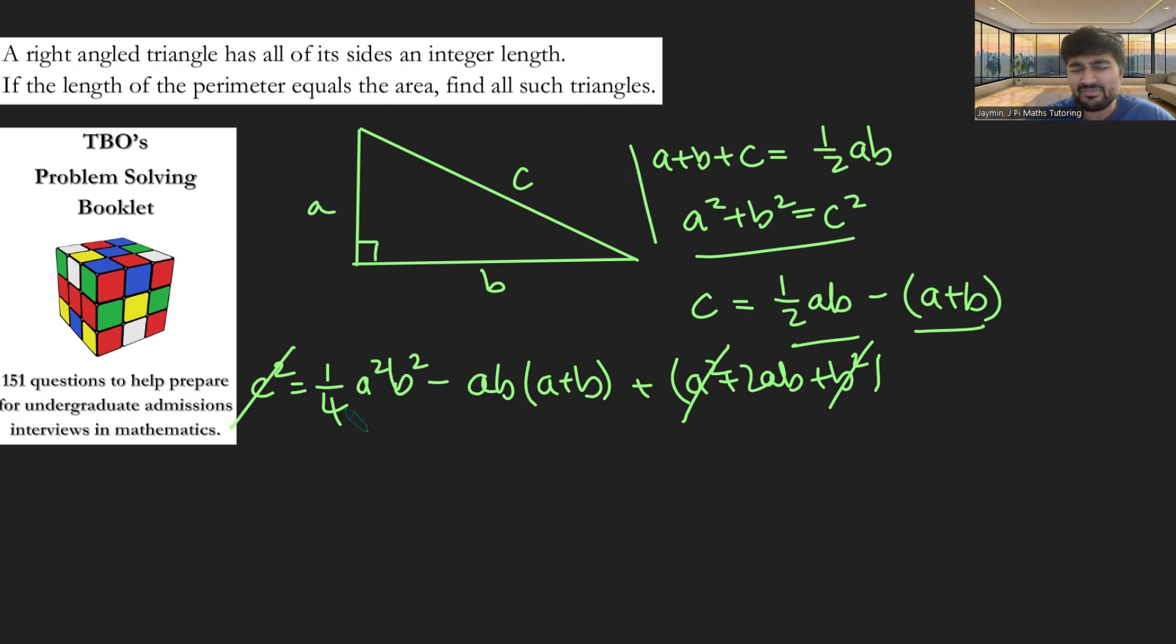Okay, cool. I'm going to multiply by 4 to get rid of this fraction here, so I'm going to get 0 equals A squared B squared minus 4AB times A plus B plus 8AB, like so.